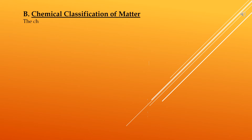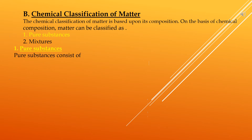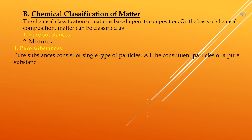The second classification of matter is the chemical classification, which is based upon its composition. On the basis of chemical composition, matter can be classified as pure substances and mixtures. Pure substances consist of a single type of particles — all the constituent particles of a pure substance are the same in their chemical nature.